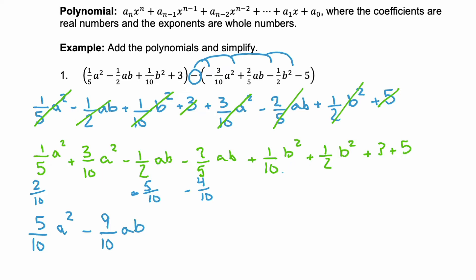Next we have the b squareds. We have 1/10 and 1/2. Well, 1/2 can be rewritten as 5/10, so combining those we get 6/10 b squared. And then the nice one: 3 plus 5 is 8.